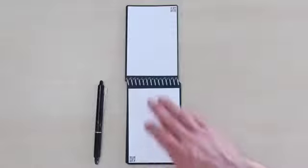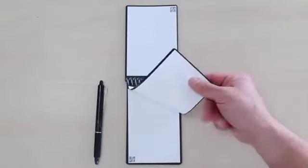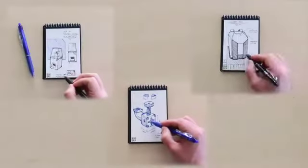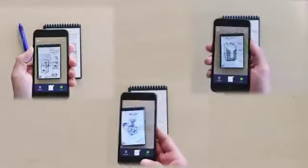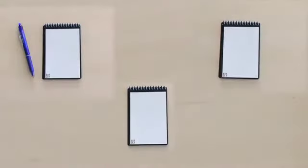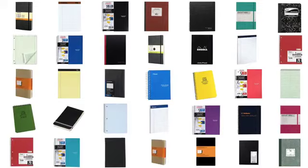The Mini is a pocket-sized Rocketbook which uses the same synthetic blend paper as larger core books. So, you simply write, scan, and erase. The Mini is like having 1,000 notebooks right in your pocket.